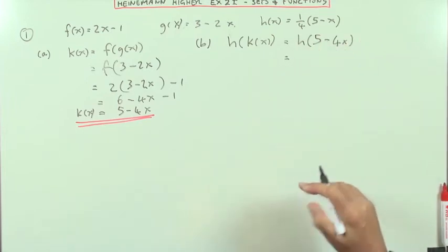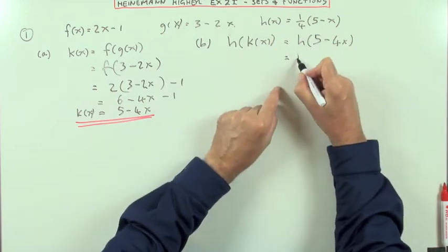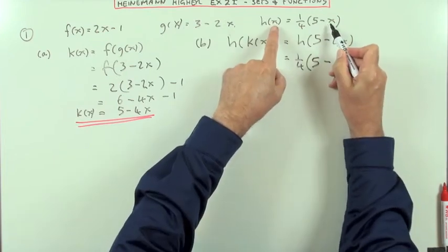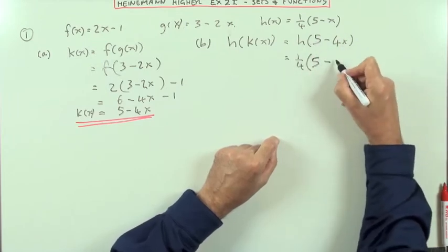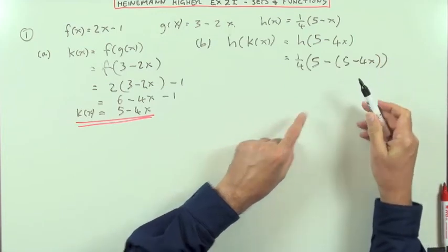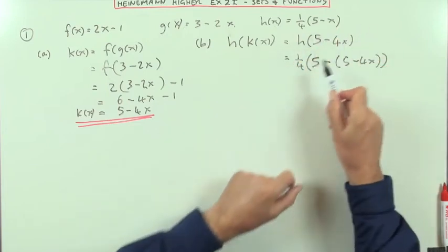And then h just does what it does. Whatever you put in, it'll do one quarter of five minus, and here it is, five minus whatever you put in. You're putting this into it. So it's going to be five minus five minus four x. That's the part that's going in, the input.